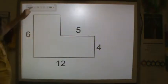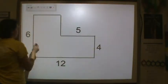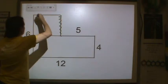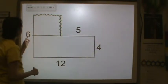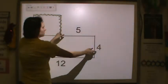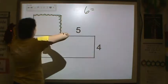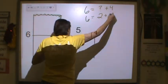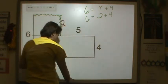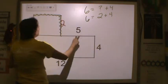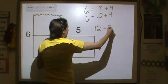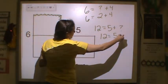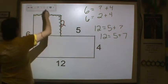Let's do one more together, then it's your turn. Remember the first step is to break the shape into two rectangles, then find any missing sides. For the widths, 6 is equal to a missing piece plus 4, so 6 equals 2 plus 4 — the missing side is 2. For the lengths, the big long side is equal to the two shorter sides: 12 is equal to 5 plus 7, so the missing side is 7.